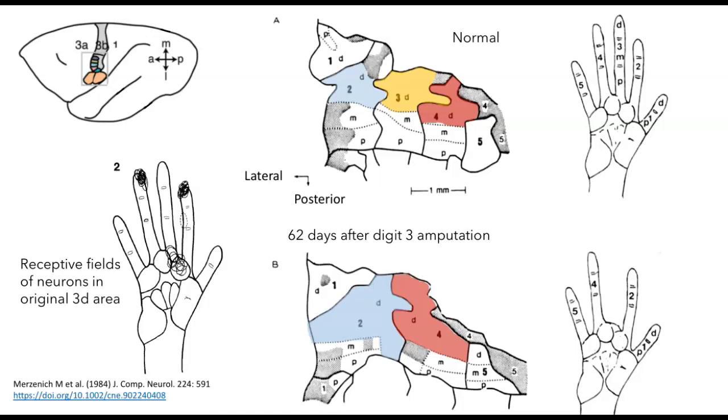These are kind of gruesome-sounding experiments, but they have real clinical applications, because sadly, it's not unusual for humans to lose a limb. And we'd like to know what happens in the brain in response to these amputations.